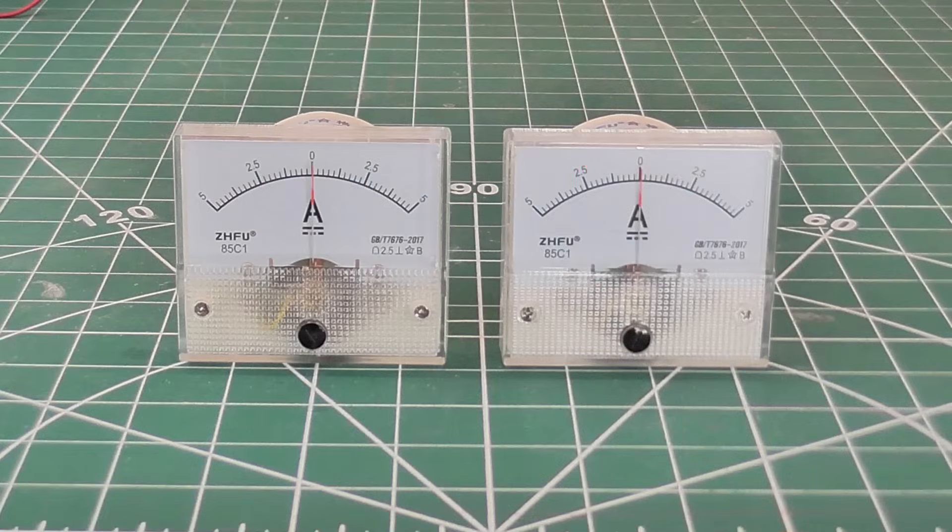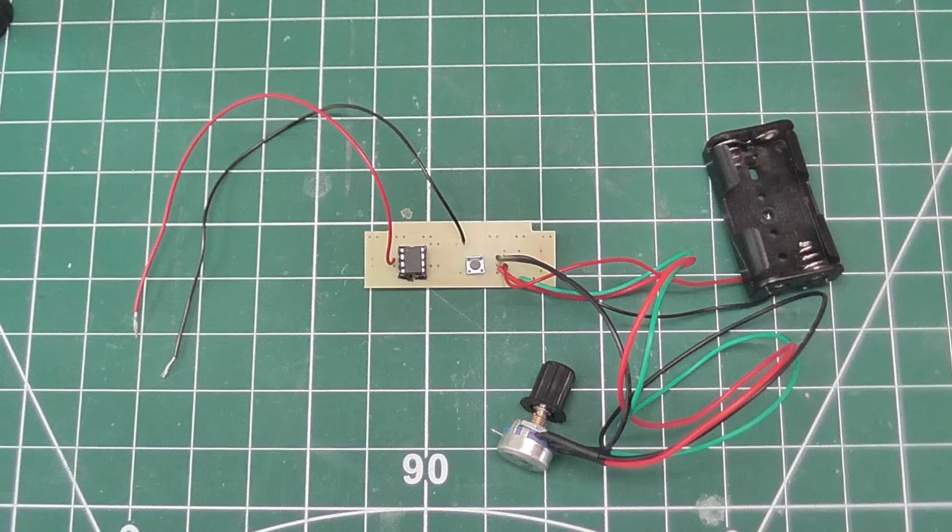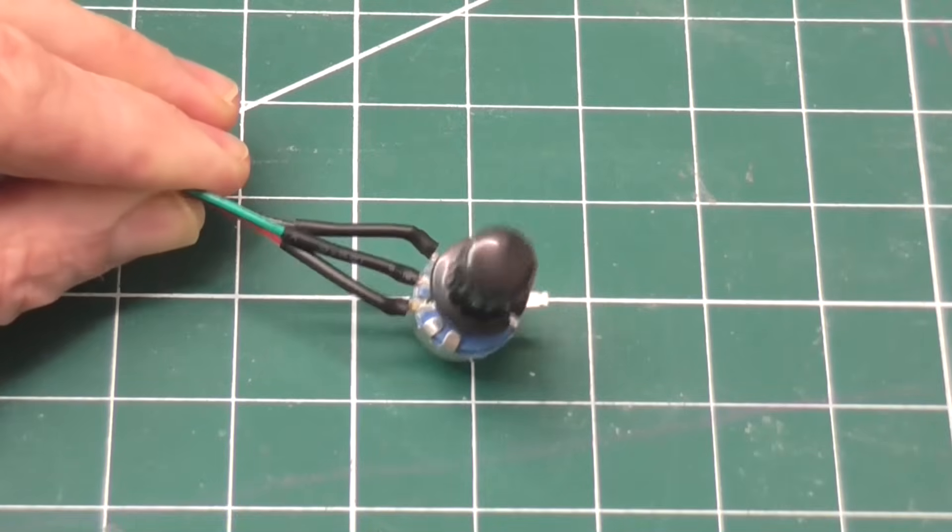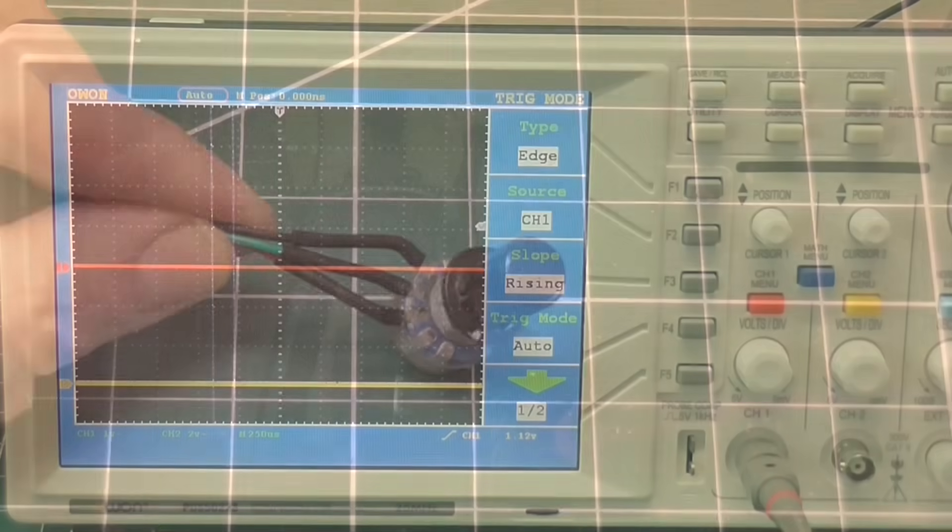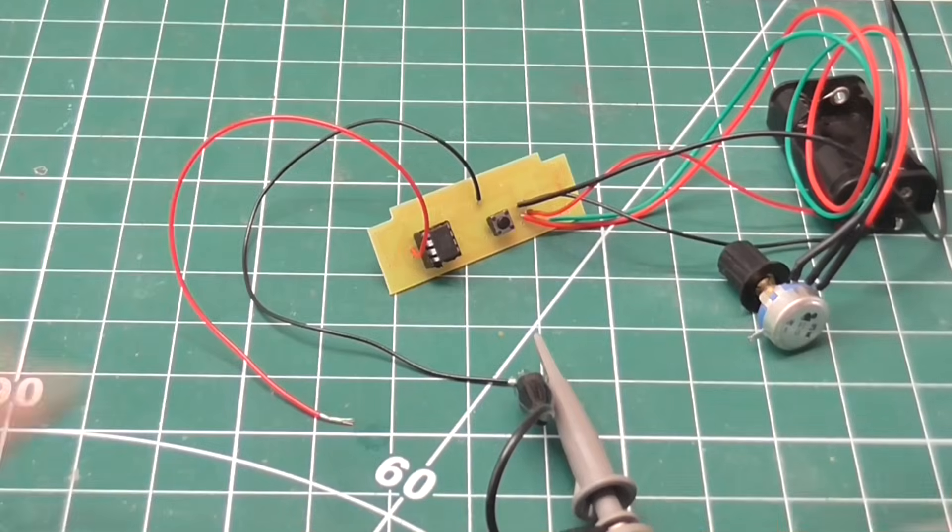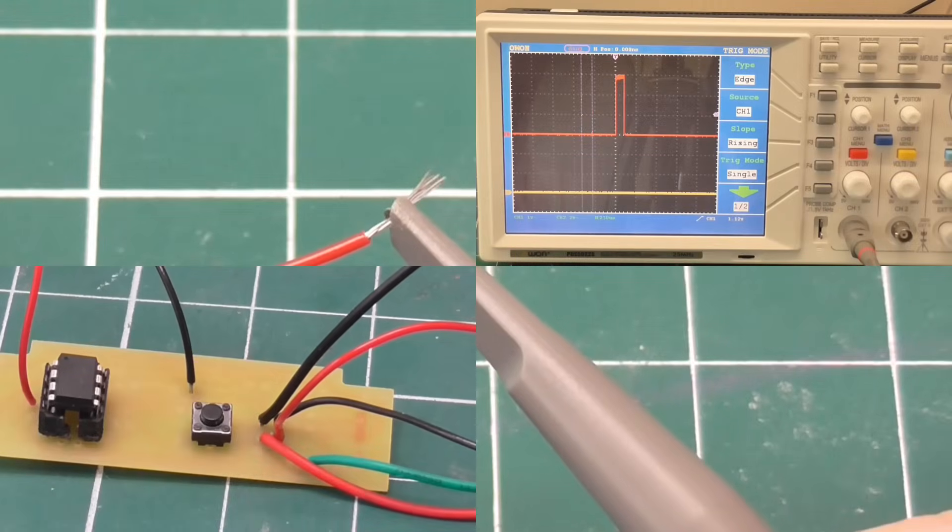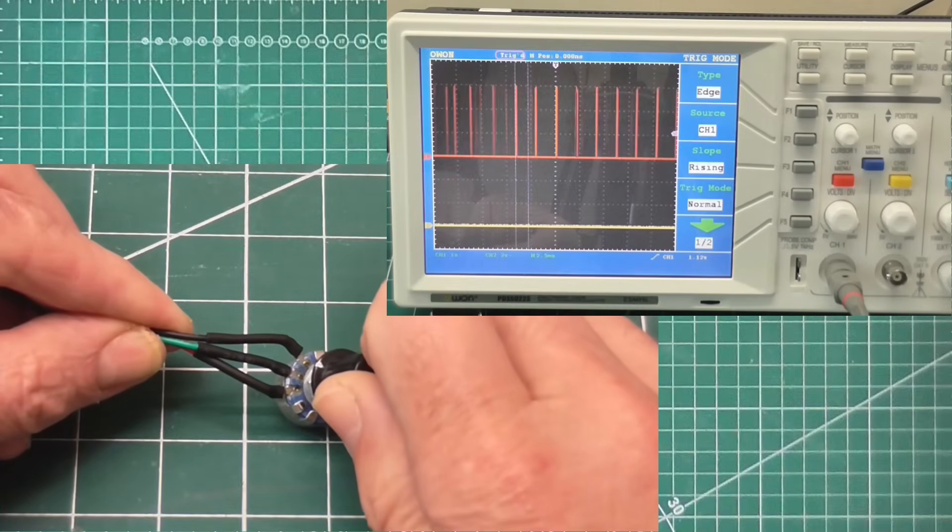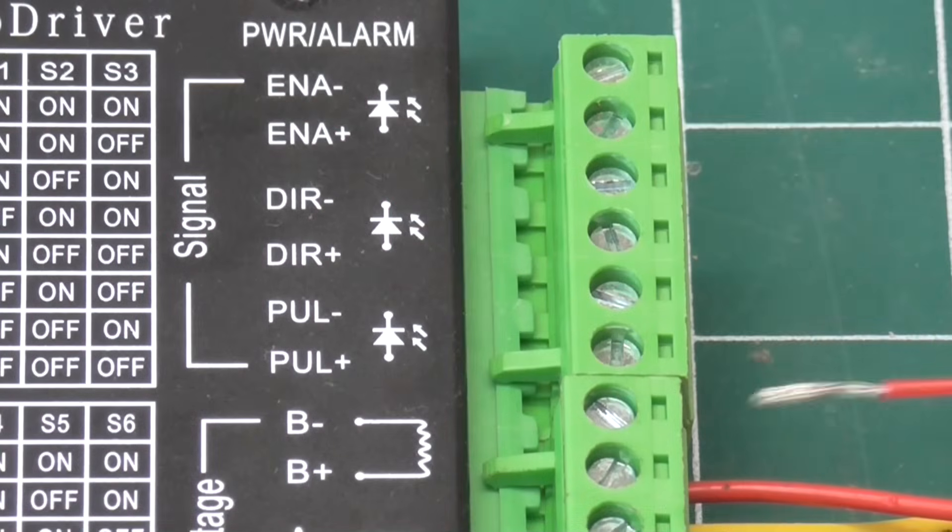I also have these two ammeters, which I'll put in series with each phase. I put together a quick circuit, which allows me to send a single step pulse by pushing this button. Or send a train of pulses at any frequency I like, by turning this potentiometer. This is connected to the step pulse input of the driver.